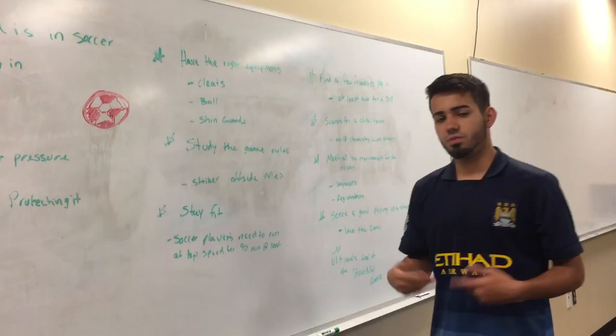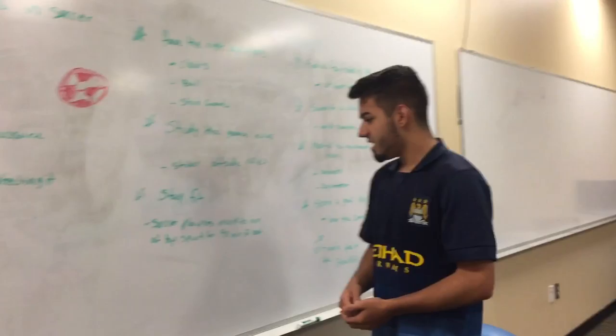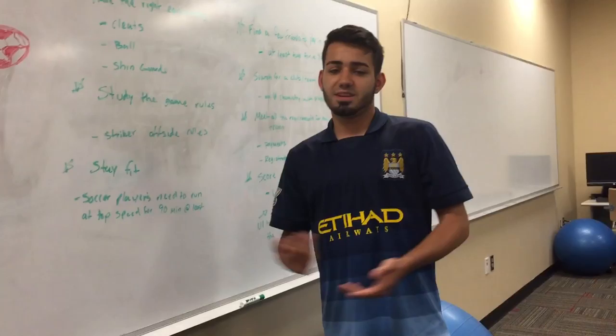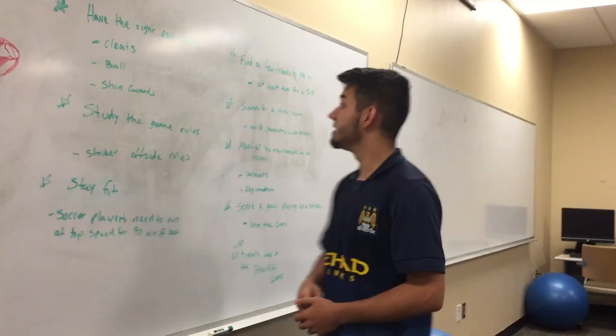And you've got to stay fit and healthy, eat the right sort of foods, and not be drinking and partying, drinking beer and stuff. Because soccer players have to run at least 90 minutes at top speed. Well, 45 and 45, you get a five-minute break sometimes.